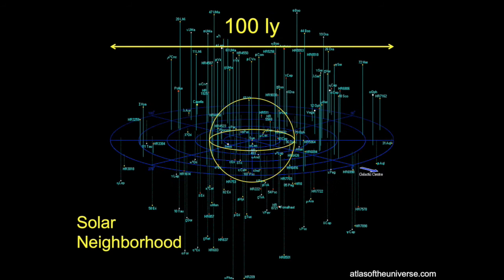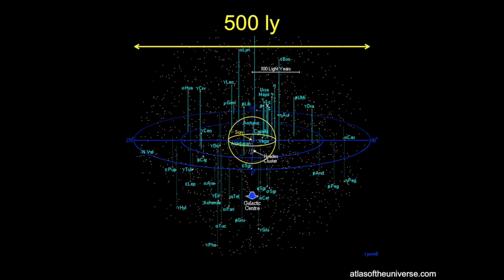Jumping out another factor of ten to a hundred light years, we get into the realm of the solar neighborhood — the group of stars we move through space with. This is the place where we will be searching for planets around other stars. A region a hundred light years across takes light a hundred years to cross. At a distance of a thousand trillion kilometers from the Sun, we're still in the neighborhood.